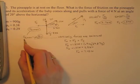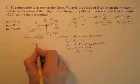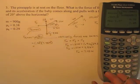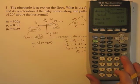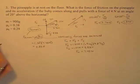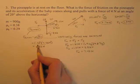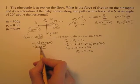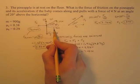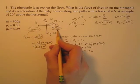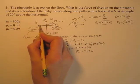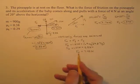Now I can calculate the maximum force of static friction. Mu static is 0.38 and the normal force is 7.45 newtons. So 0.38 times 7.45 equals 2.83 newtons — that's the maximum static friction. The pineapple is at rest, and if the baby pulls with more horizontal force than this, it will move. The baby's horizontal force was 3.76 newtons, which is bigger than the maximum static friction of 2.83 newtons. So the pineapple is going to move.